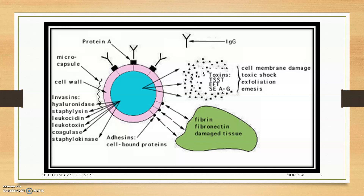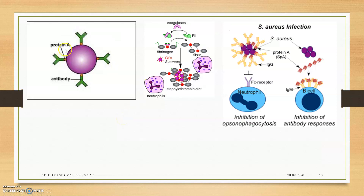The function of Protein A: wherever the toxins are found, their position relative to the cell will be shown in the diagram. Protein A binds to antibodies, interfering with the immune response to infection. Coagulase works by producing a clot. Thank you.